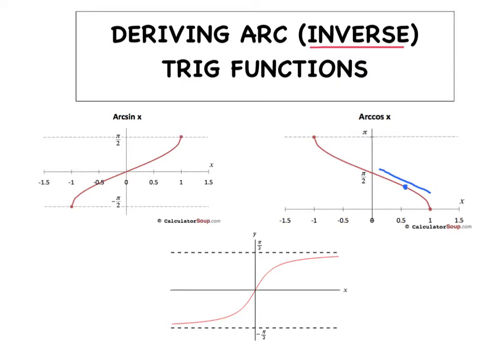I just wanted to clarify that these are not horizontal asymptotes for arc sine and arc cosine. I think they're just there as boundaries to show you how high the graph runs up to. But by the time you get to arc tangent, we do have the really nice horizontal asymptotes at π/2 and negative π/2.